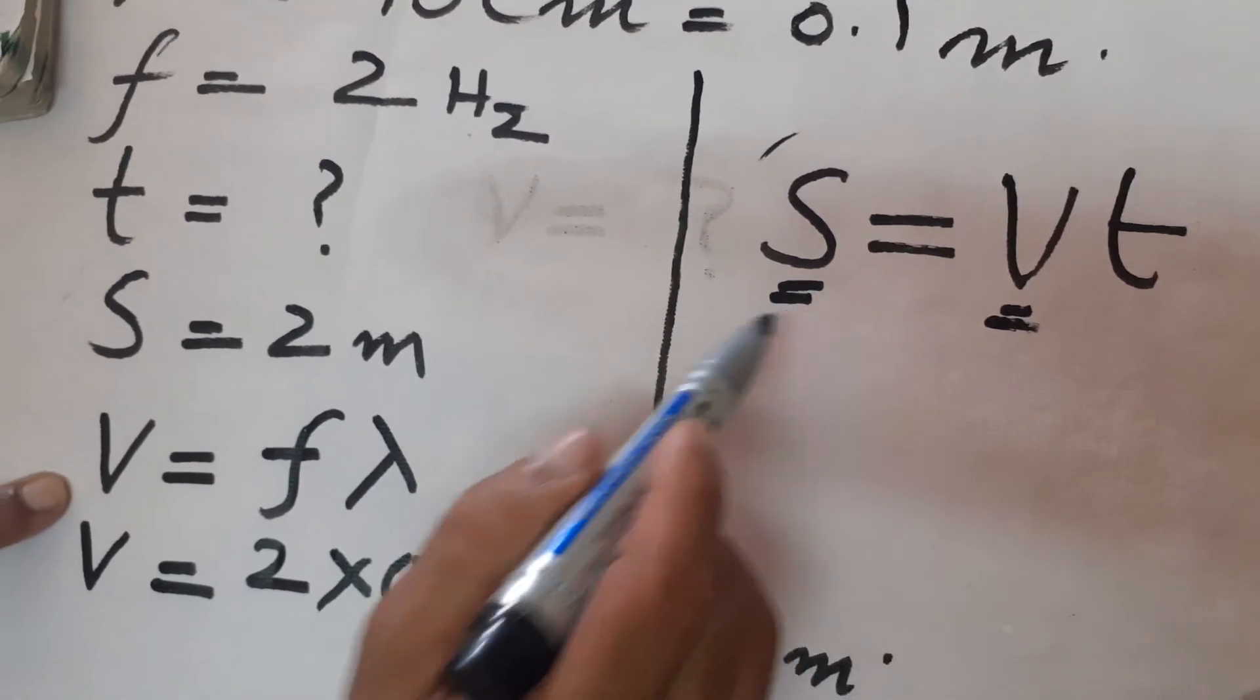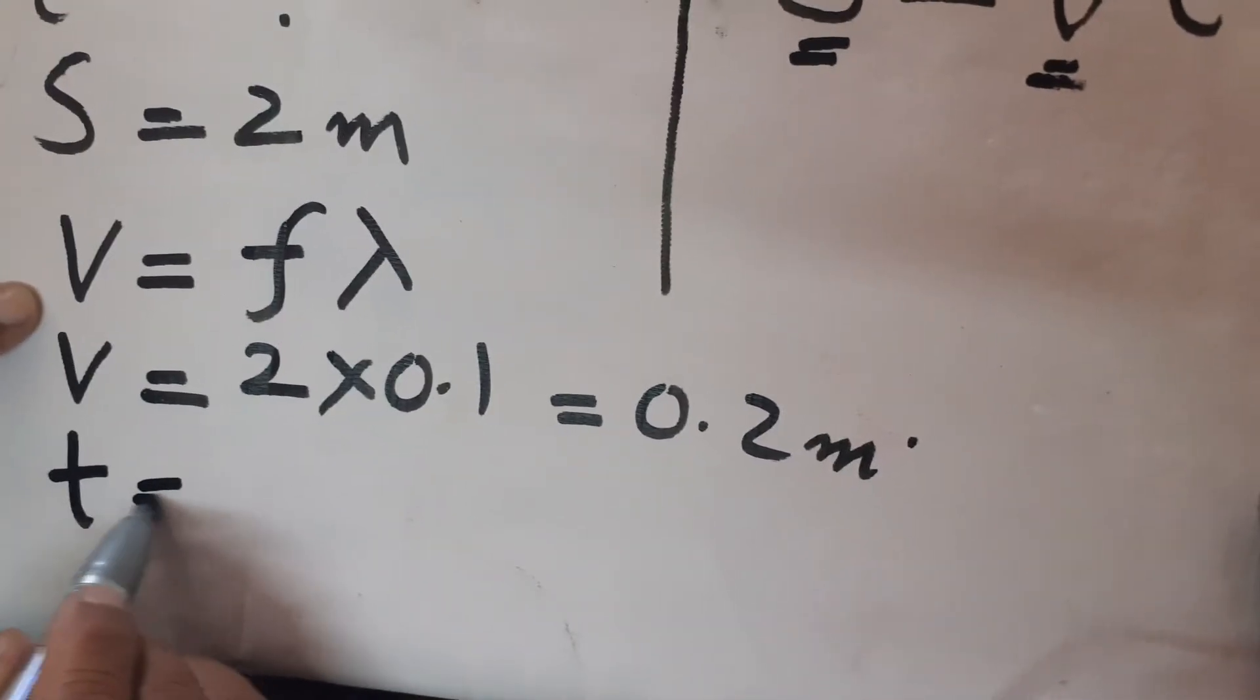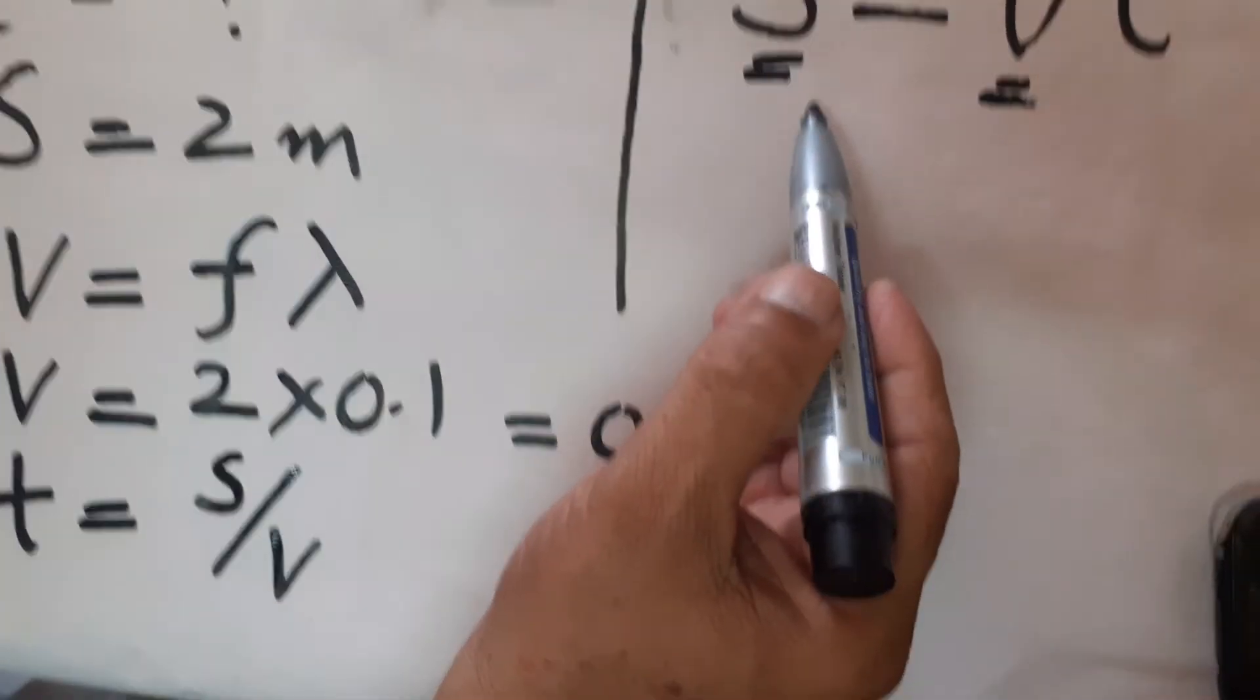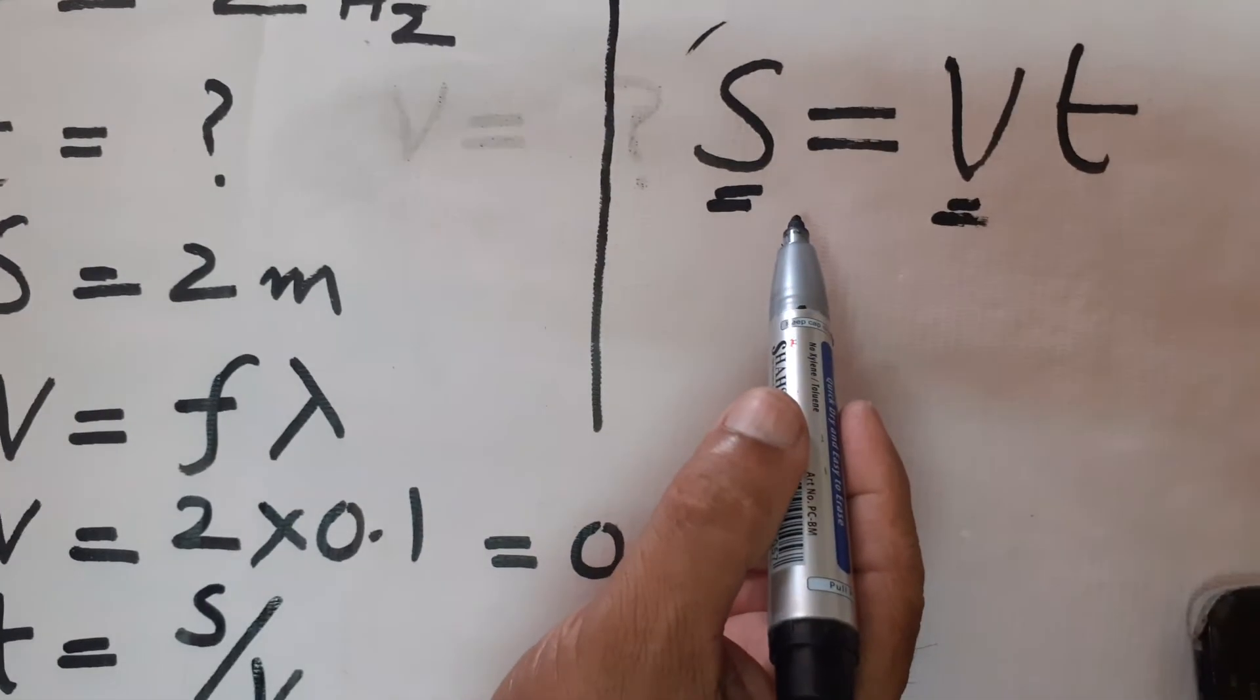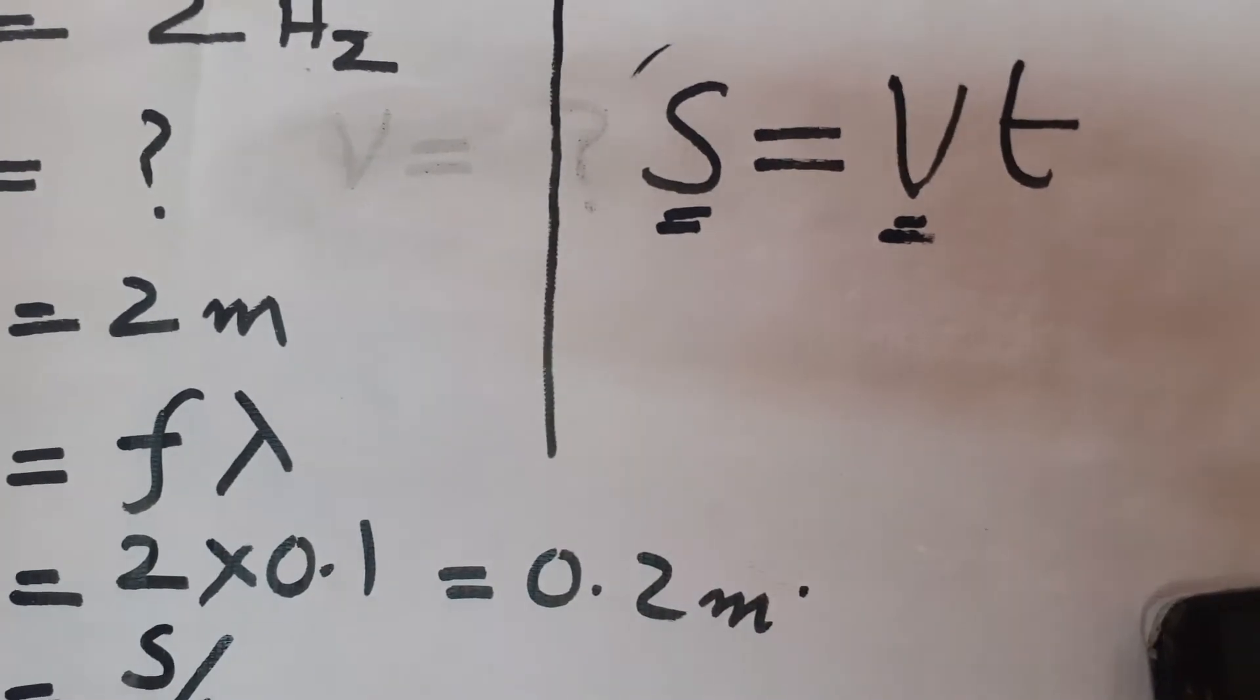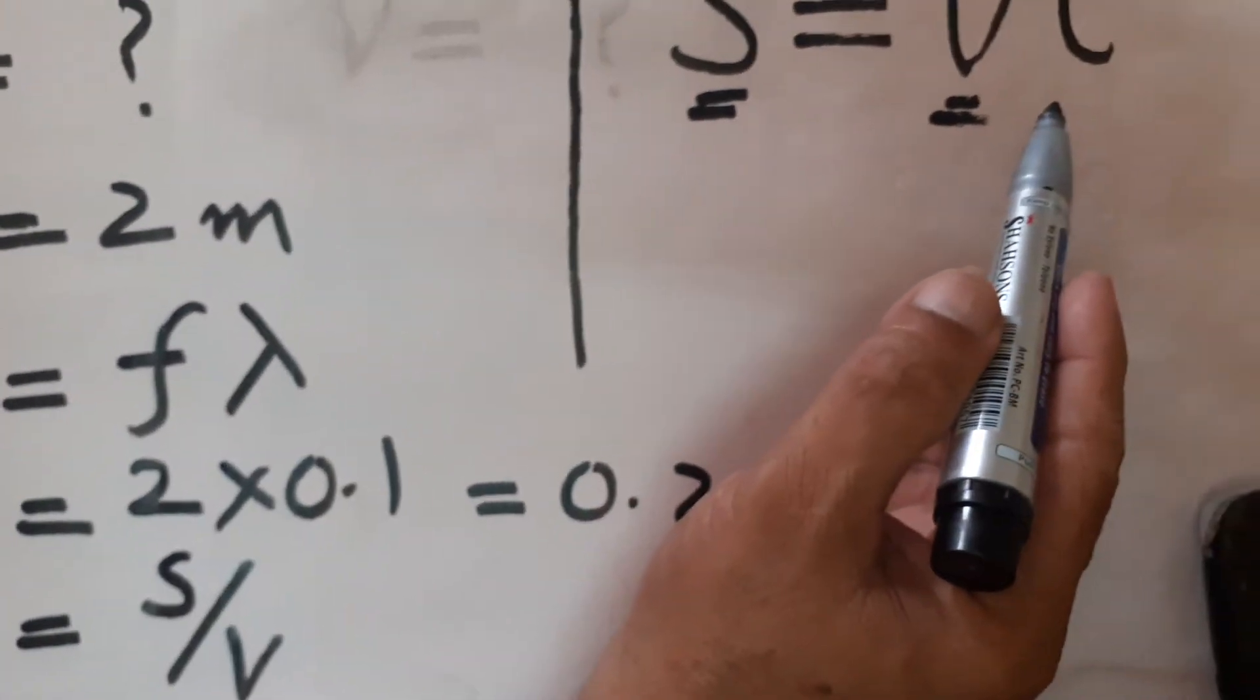By using this equation, we can find the time. We modify the equation according to our need: t equals s over v.